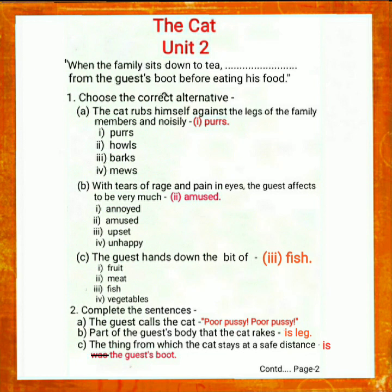C. The guest hands down the best of — option 1: fruit; option 2: meat; option 3: feast; option 4: vegetables. The correct answer is: the guest hands down the best of feast.